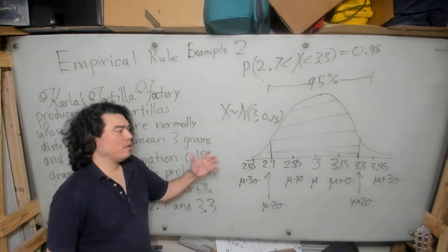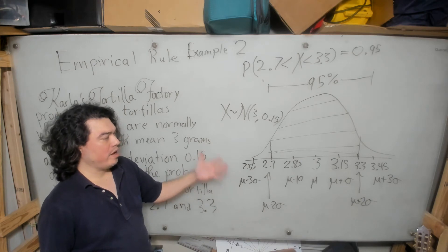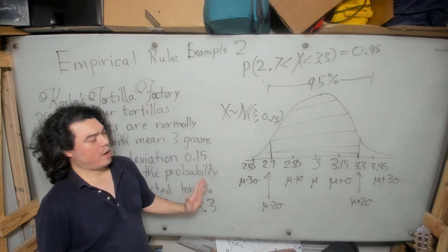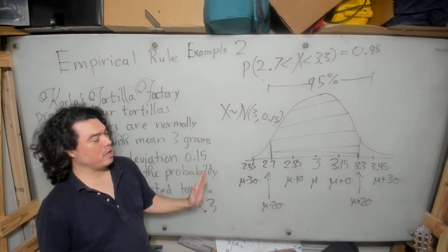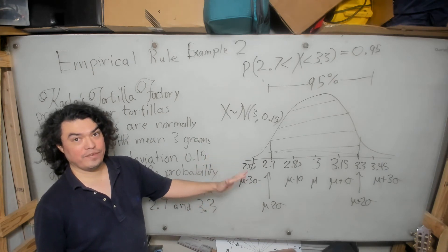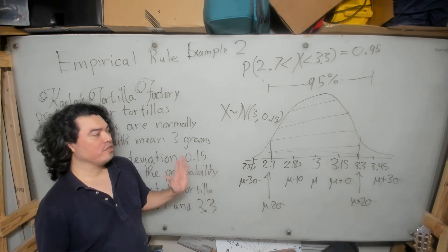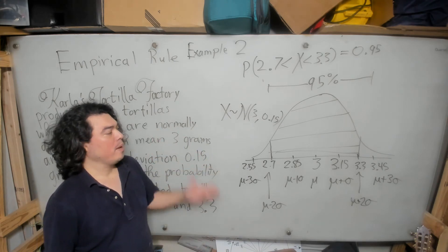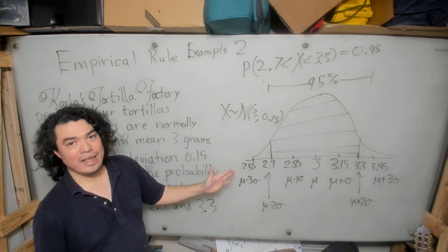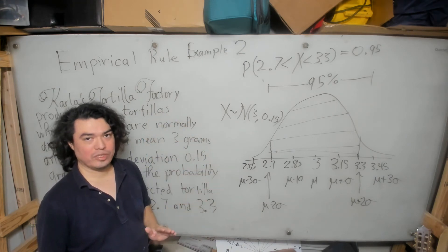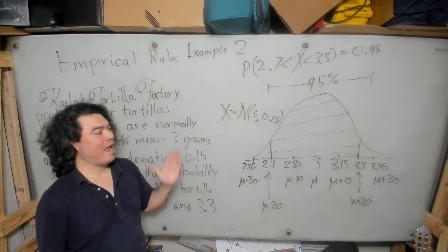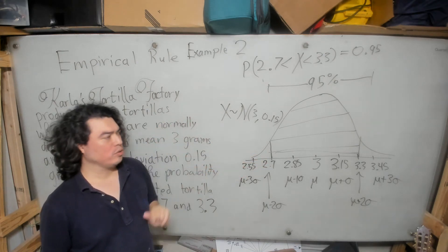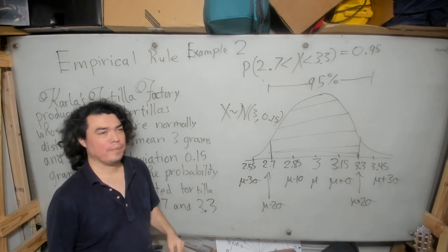And you see, what I'm trying to claim to you also in drawing this figure is that it was very easy when I drew this figure, and when I labeled the multiples of the standard deviation from the mean, it was very easy to identify that this was going to be an empirical rule problem, because the 2.7 lined up exactly with two standard deviations below the mean, and the 3.3 lined up exactly two standard deviations to the right of the mean.